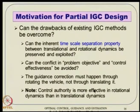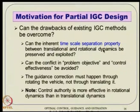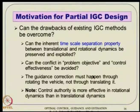These are the drawbacks. The motivation for partial IGC is: we want to retain the benefits of IGC but overcome its drawbacks. The questions are: can the inherent time scale separation property between translational and rotational dynamics be preserved and exploited? The conflict between problem objective and control effectiveness has to be avoided. The guidance correction must happen through the rotation of the vehicle, not through translation — control authority is more effective in rotational dynamics.